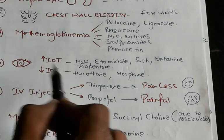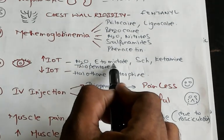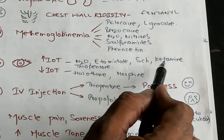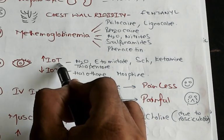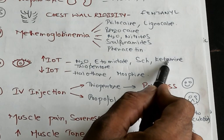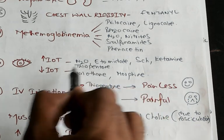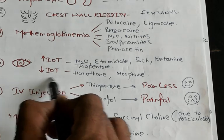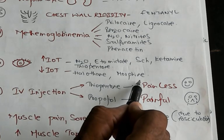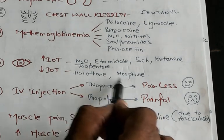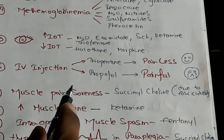Increased intraocular tension versus decreased intraocular tension is a favorite question. Nitrous oxide, etomidate, succinylcholine, ketamine, and thiopentone all lead to increased IOP. Decreased IOP is the feature of halothane and morphine — they are favorites for the ophthalmic surgeon because they decrease intraocular tension.